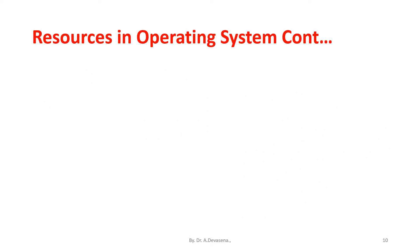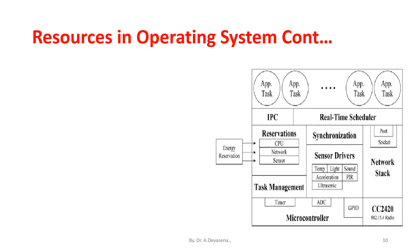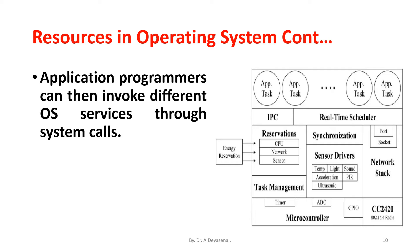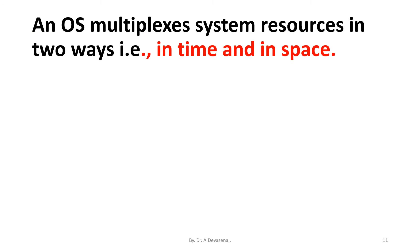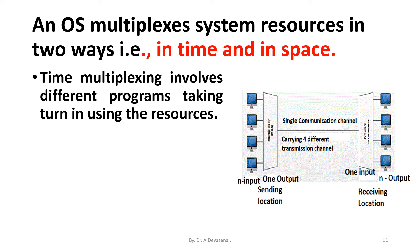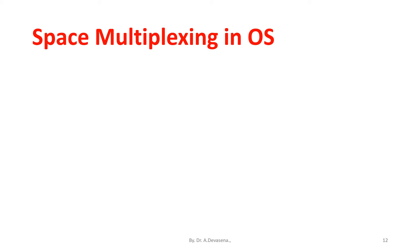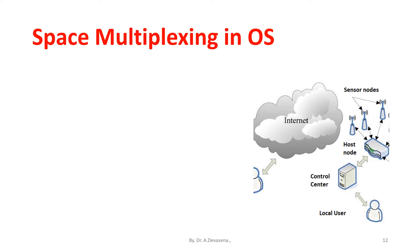Application programmers can then invoke different operating system services through system calls, and the OS multiplexes system resources in two ways: in time and in space. Time multiplexing involves different programs taking turns using the resources, while space multiplexing involves different programs accessing parts of the resource possibly at the same time.